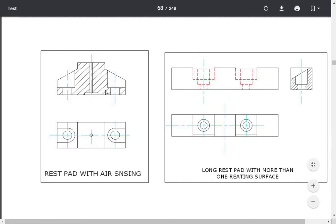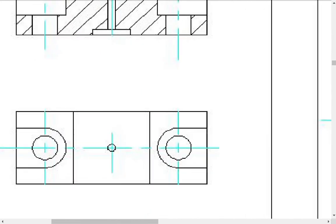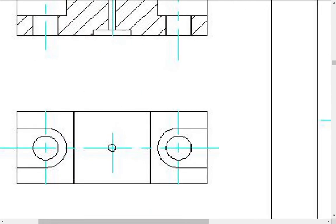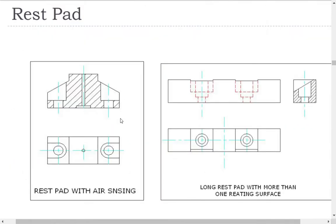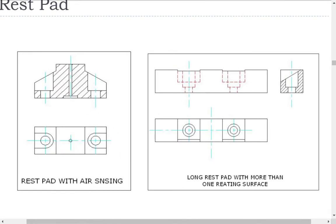For finishing operation, resting area should be maximum of 15 diameter. Air sensing and cleaning hole to be provided for confirmation of component resting properly. Spacer below the rest pad to be provided to maintain geometrical and dimensional accuracies. Rest pad material should be hardened and ground 56 to 58 HRC.